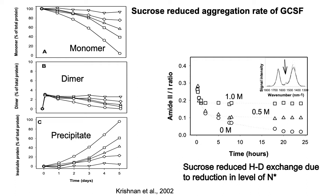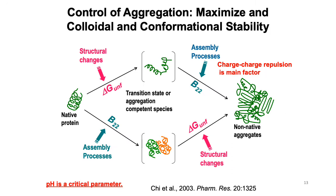And again, practically, we can look here. This is GCSF loss of monomer during days of incubation at 37 degrees at pH 7. If you have higher and higher amounts of sucrose in solution, there's less and less aggregation. An indication of the effect of sucrose on the level of N* is shown here. N* will have hydrogen-deuterium exchange occurring at a faster rate than the fully compact native state because N* has more solvent exposure. In the presence of zero molar sucrose, you get a larger change in infrared spectrum signal indicative of exchange. With more and more sucrose, you get less exchange, because sucrose is reducing the level of this aggregation component N*.